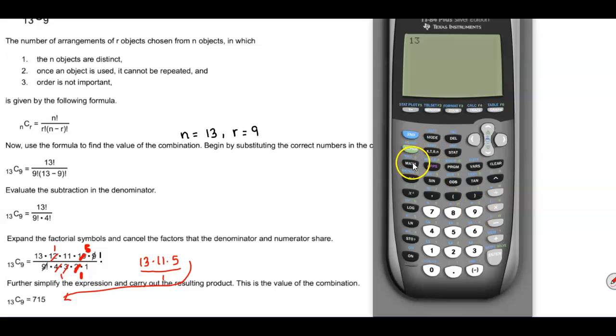And then we're going to go back to math and scroll to the right to where we see probability, then go down to number 3 and select the combination. So we're going to hit enter and then the number on the right is 9. And once we have that all in the correct order, we're going to press enter and we get the same result which is 715.